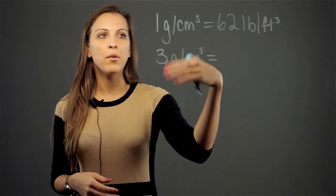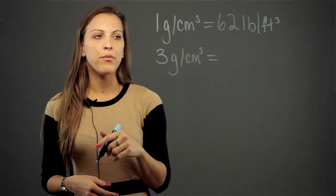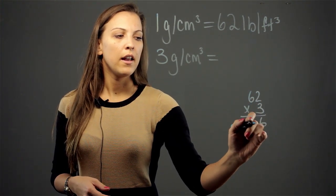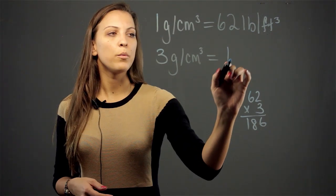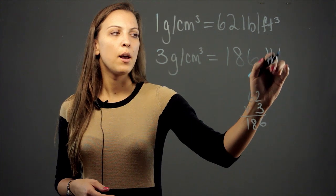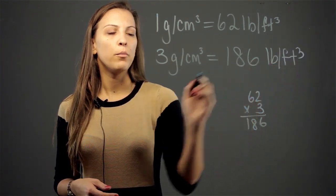All we have to do is take the multiplier, which we now know is 62, and multiply it by three. So we're going to do 62 times 3 and we get 186. Three grams per cubic centimeter is equivalent to 186 pounds per cubic foot.